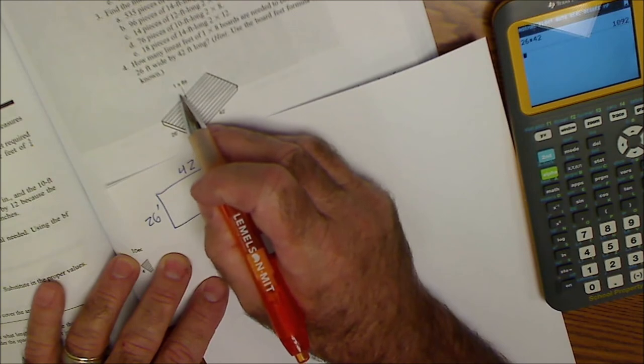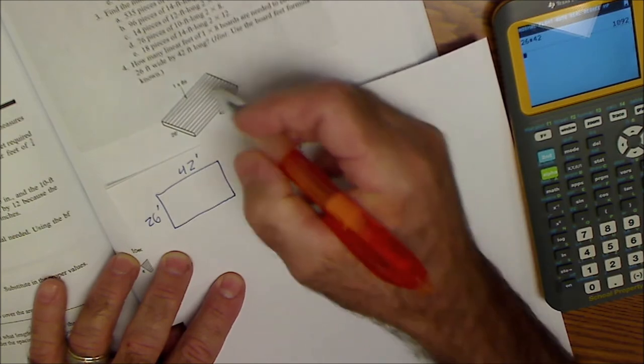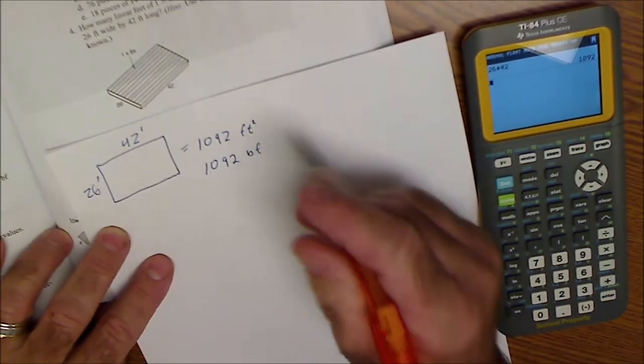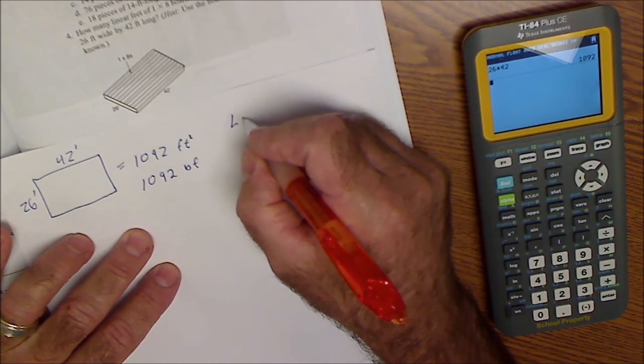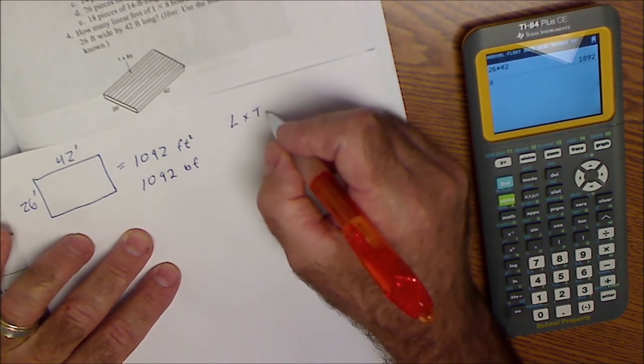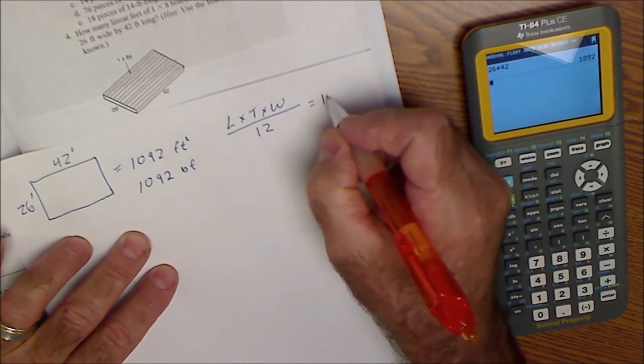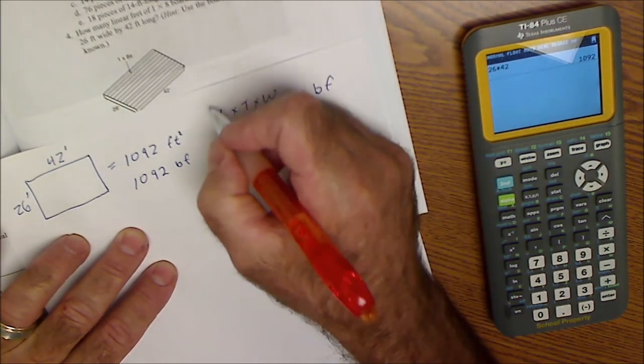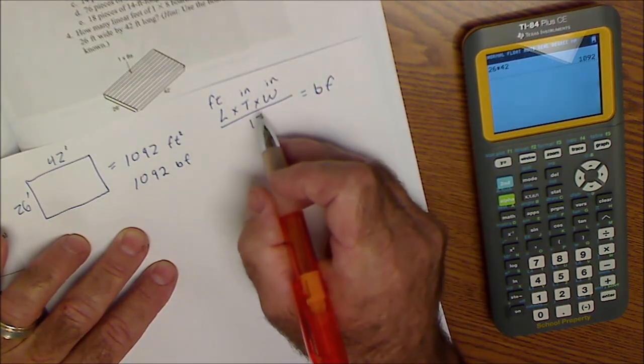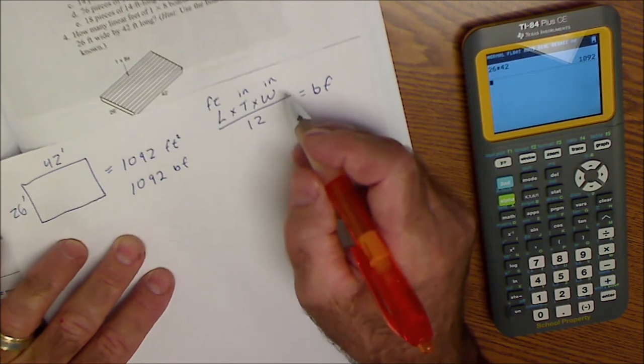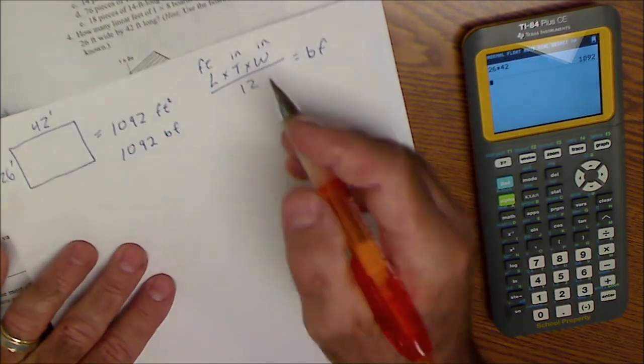However, it's 1 inch thick, so it's also 1092 board feet. Because it's 1 inch thick, the total area is 1,092 board feet. And then I need 1 by 8, so I'm going to use my formula length times thickness times width divided by 12 equals board feet. This length is in feet. This thickness is in inches. This width is in inches. Multiplication is commutative, so the order of operations doesn't matter.